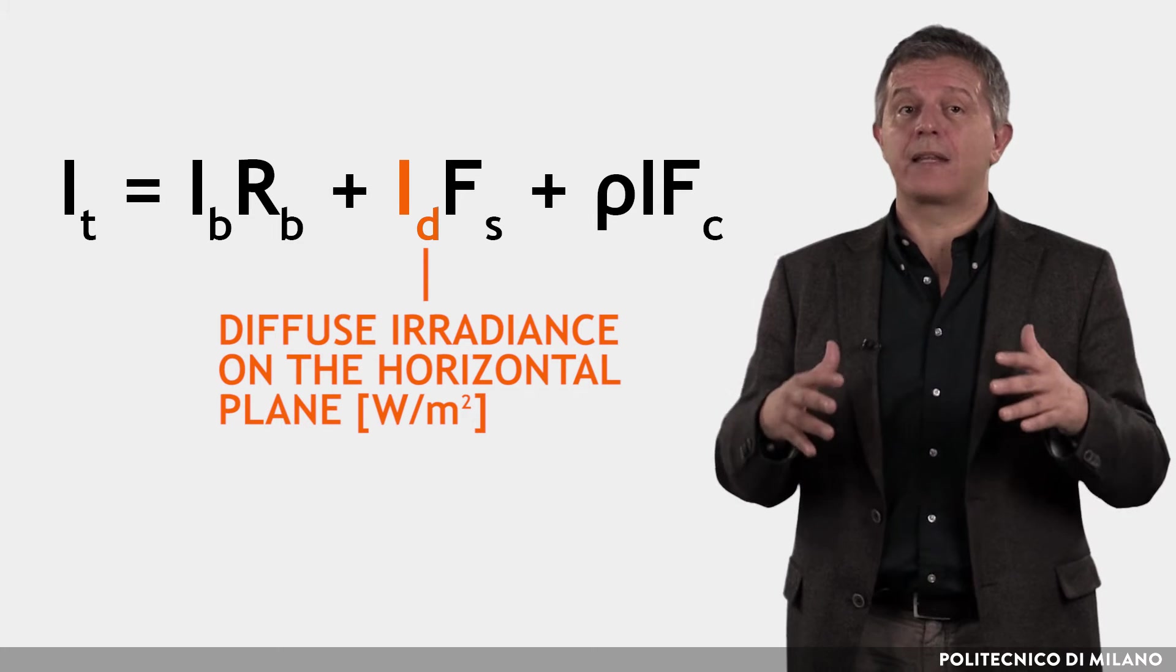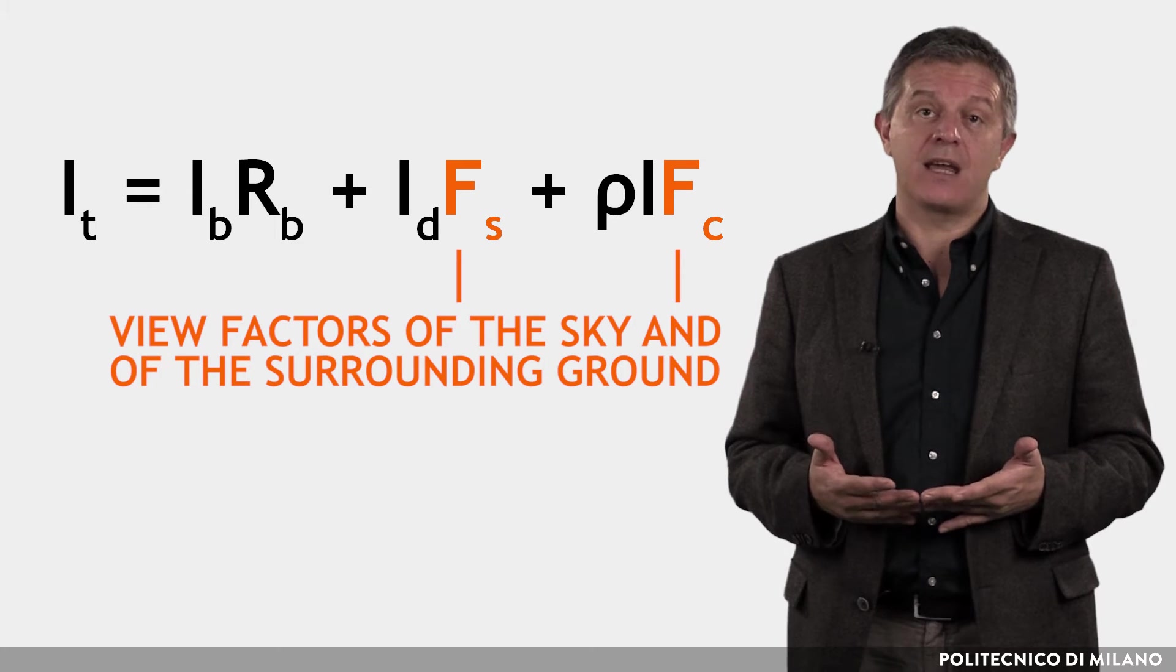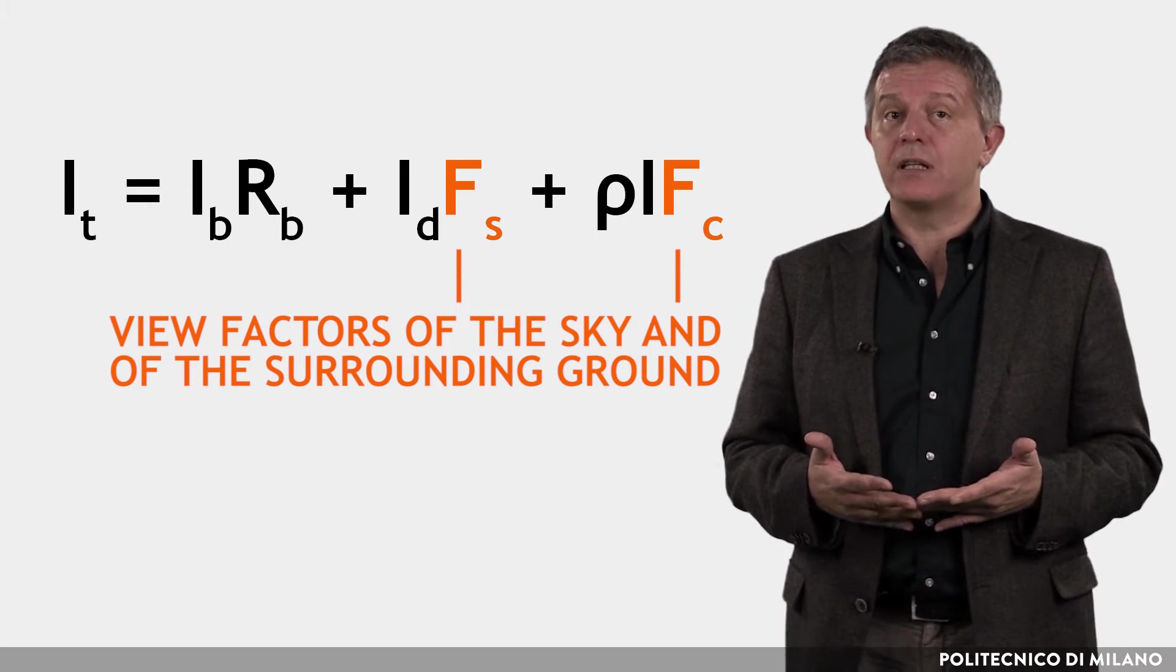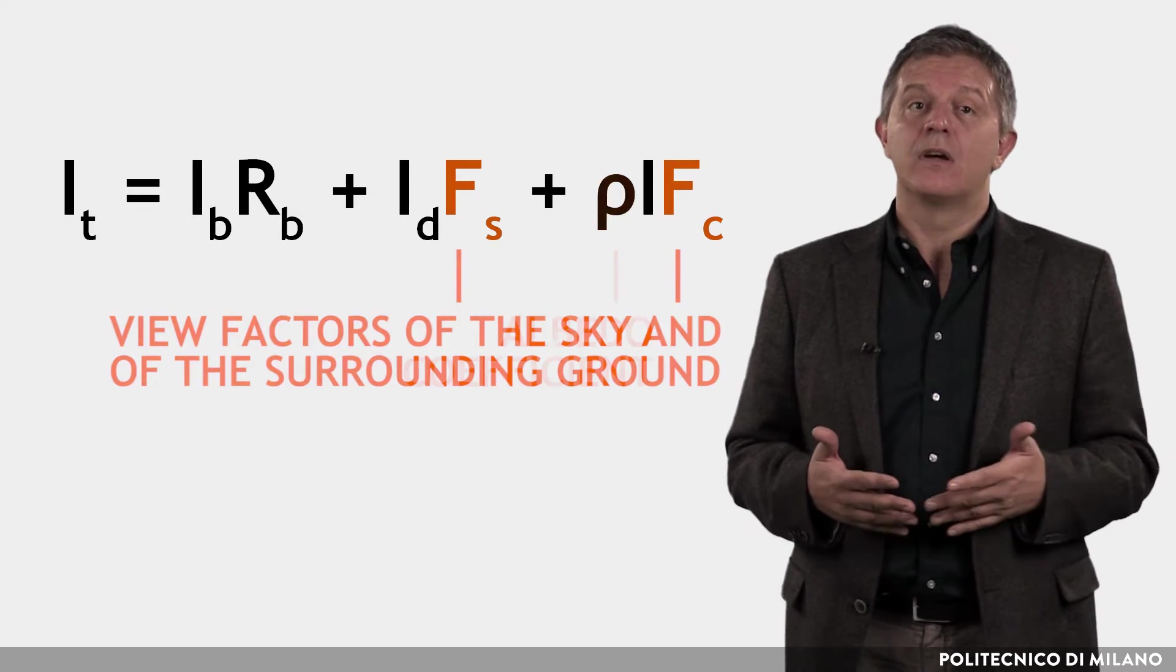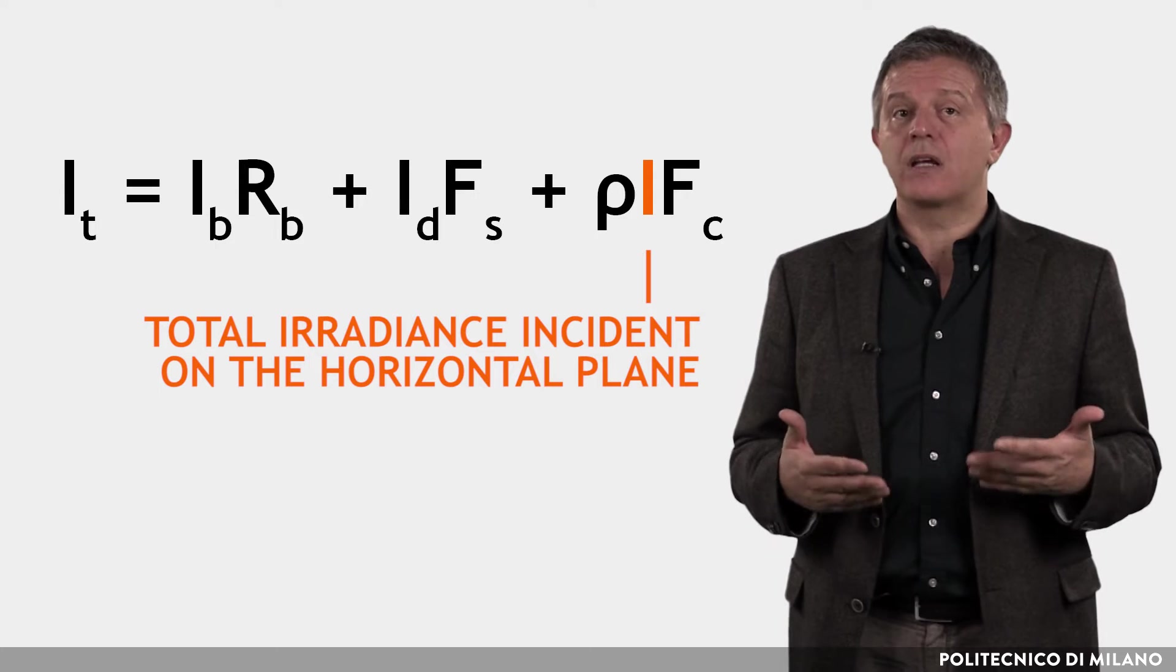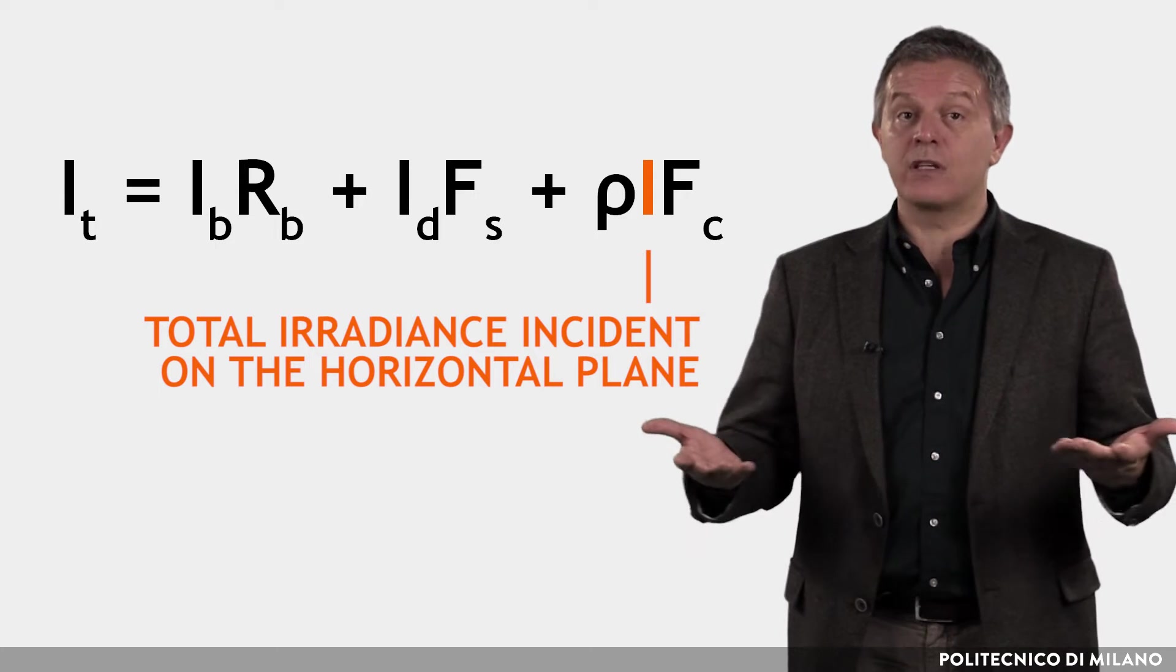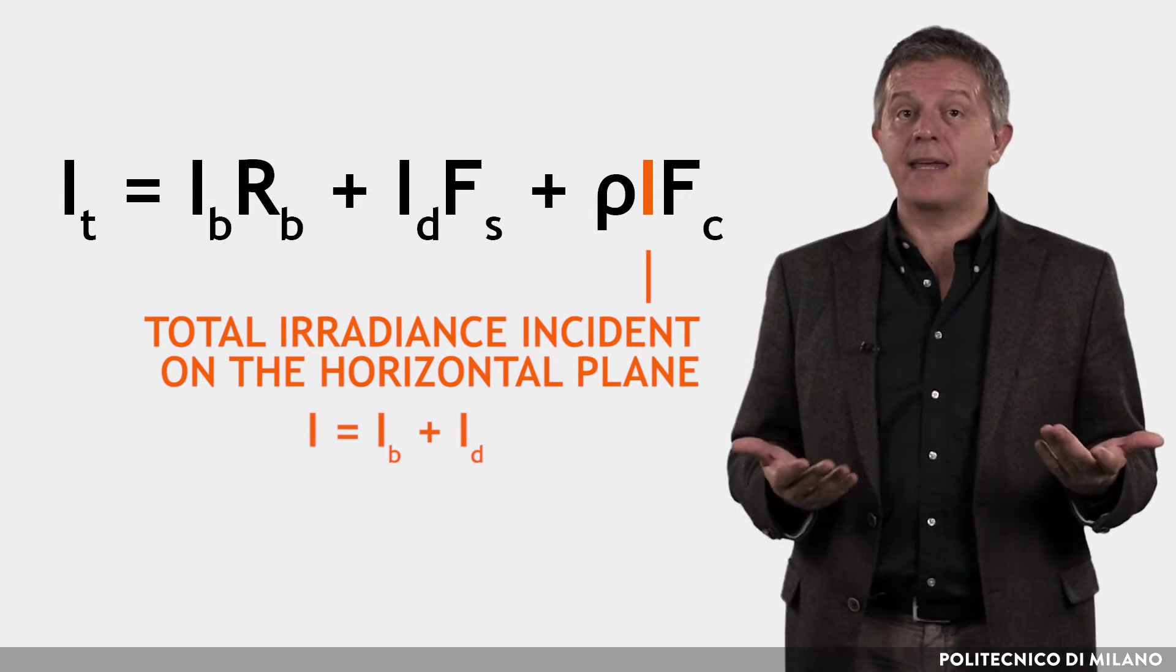ID is the diffuse irradiance on the horizontal plane expressed in watts per square meter. Fs and Fc are respectively the view factors of the sky and of the surrounding ground. Rho is the albedo coefficient. I is the total irradiance incident on the horizontal plane and is the sum of the direct and diffuse irradiance, IB and ID.